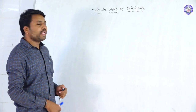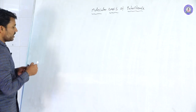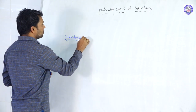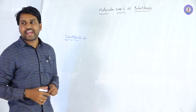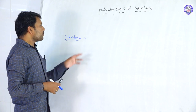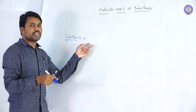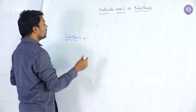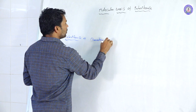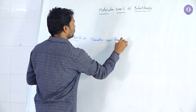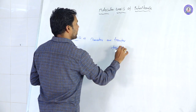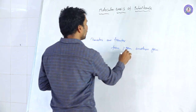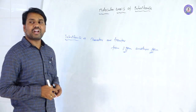Today's topic is Molecular Basis of Inheritance. Inheritance is nothing but a transfer of characters from one generation to another generation. We are already familiar with the Principles of Inheritance and Genetics from another chapter, where characters are transferred from one generation to another generation.